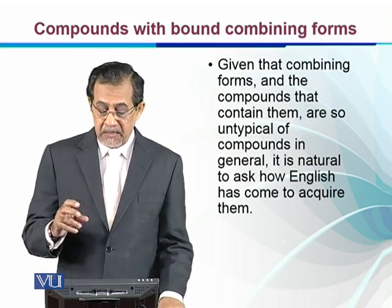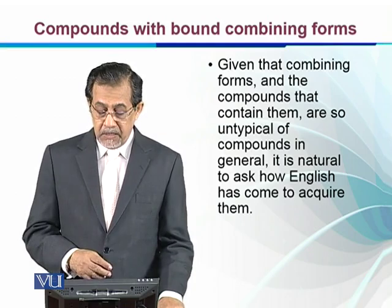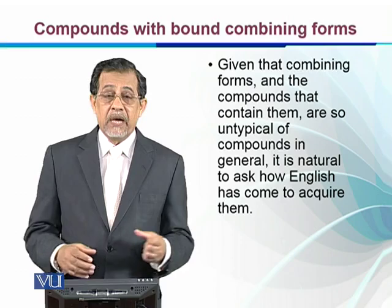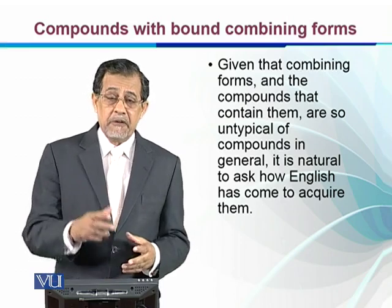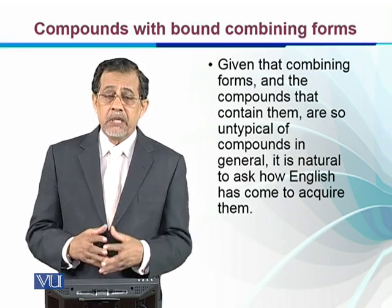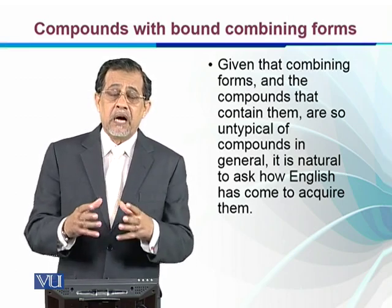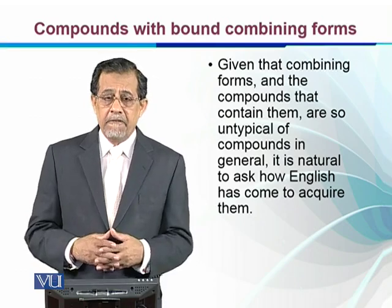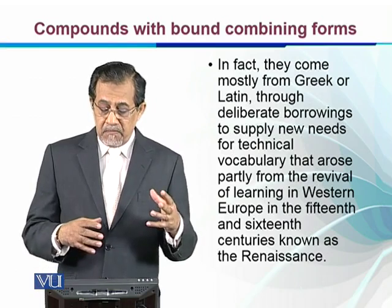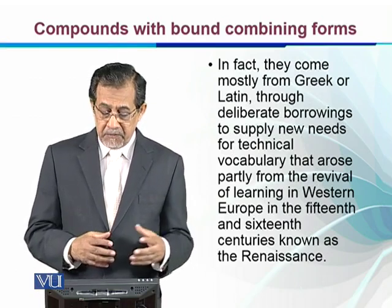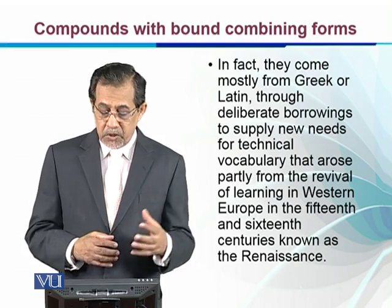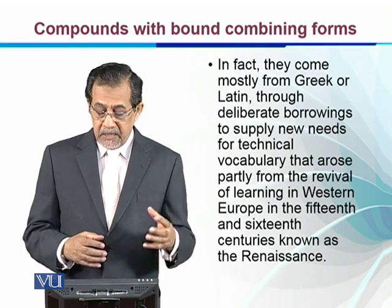Given that combining forms and the compounds containing them are so untypical of compounds in general, it is natural to ask how English has come to acquire them. Their structure is difficult to understand, so the question arises: how did English speakers come to use these forms?